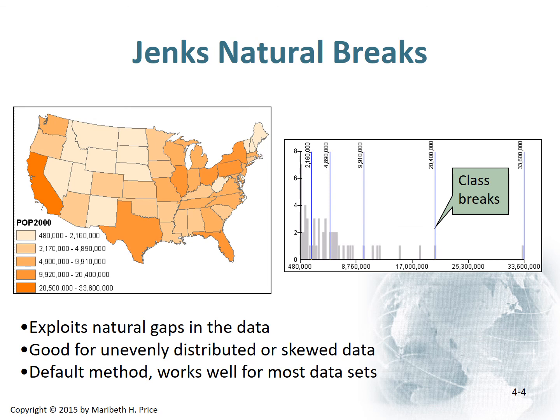Let's first talk about Jenks natural breaks. Jenks natural breaks exploits natural gaps in the data. It's good for unevenly distributed or skewed data. It is the default and it typically works well for most data sets. It looks at the distribution of your data, you tell it how many classes you want, it divides the data up into those classes, and within each class it calculates the standard deviation. Then it averages the standard deviation across all the classes to get an average standard deviation.